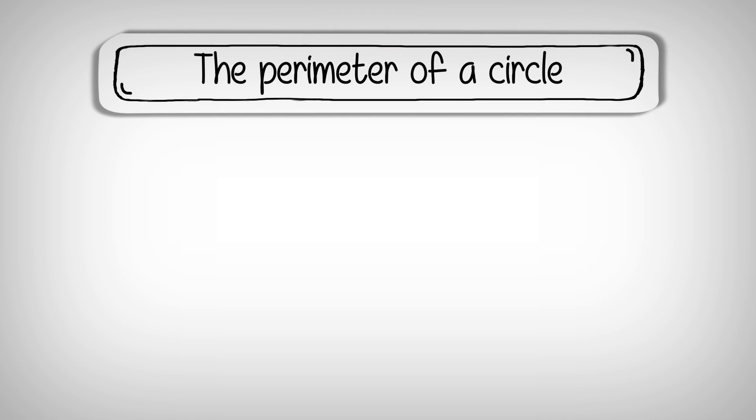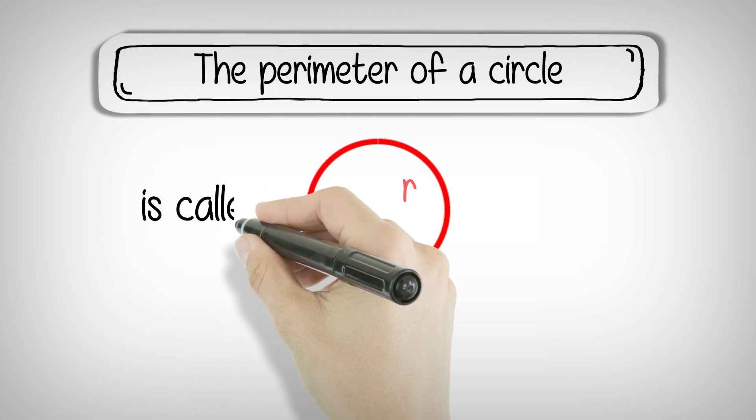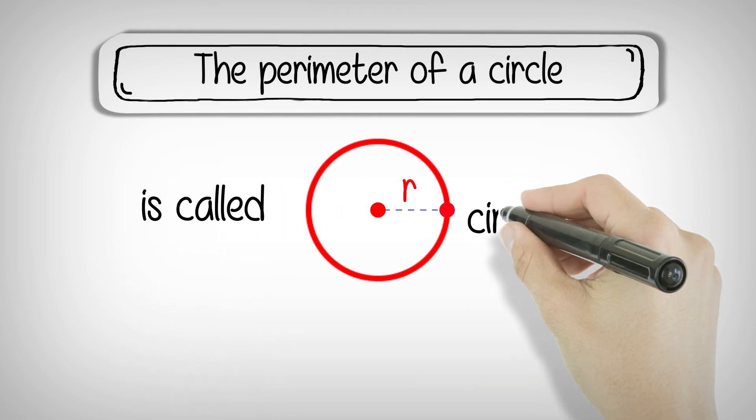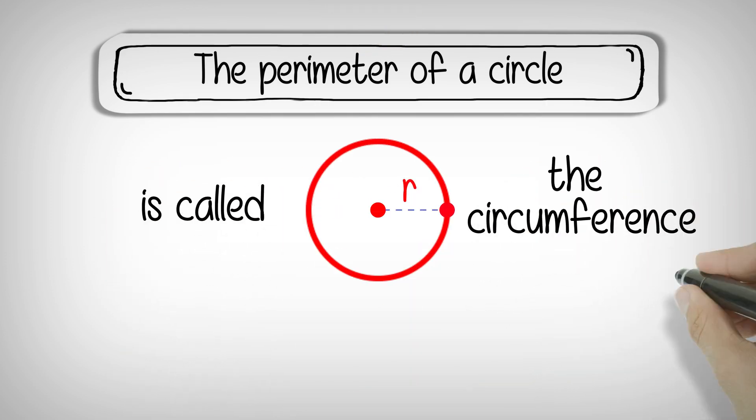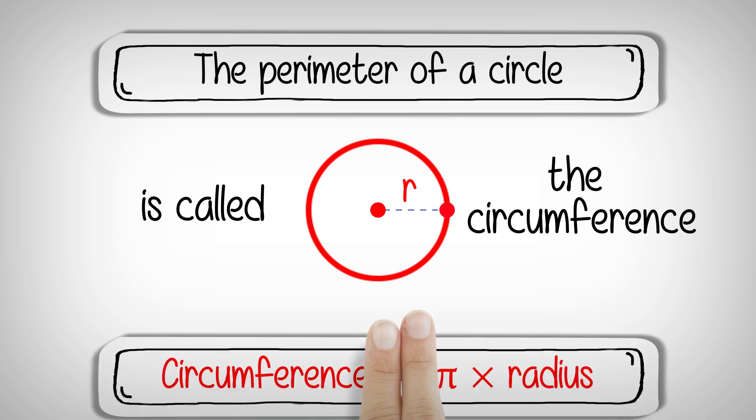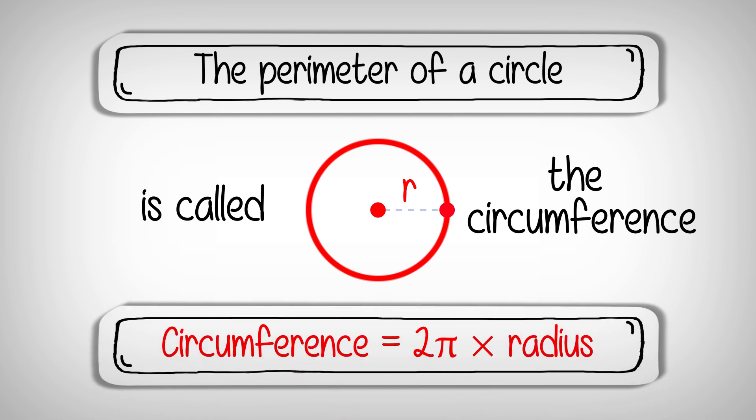The perimeter of a circle is called the circumference. To calculate the circumference, you have to use the formula 2π times the radius.